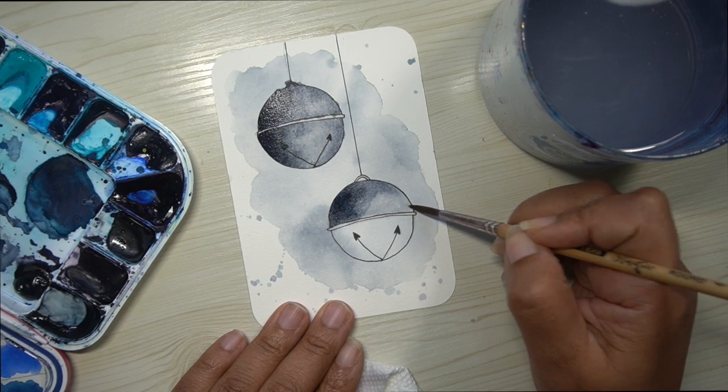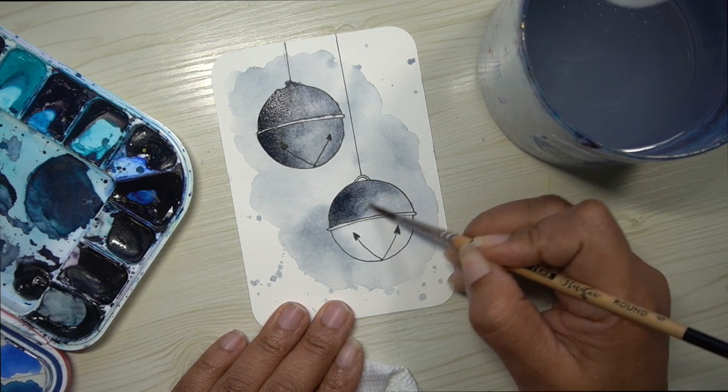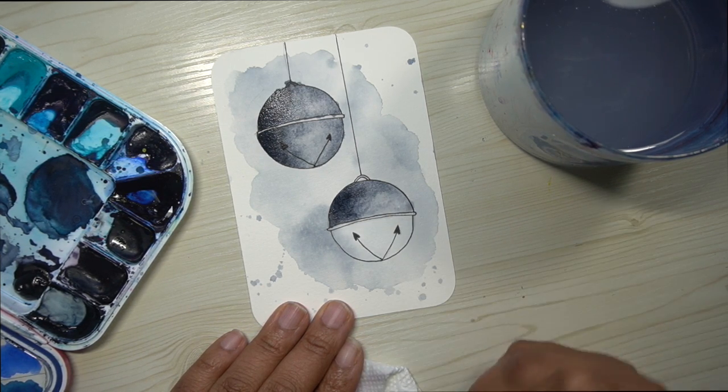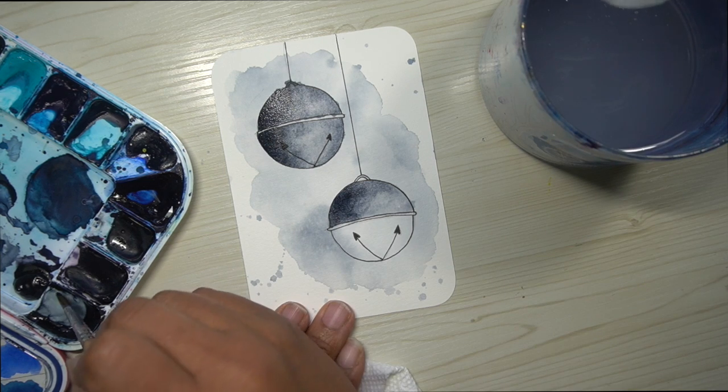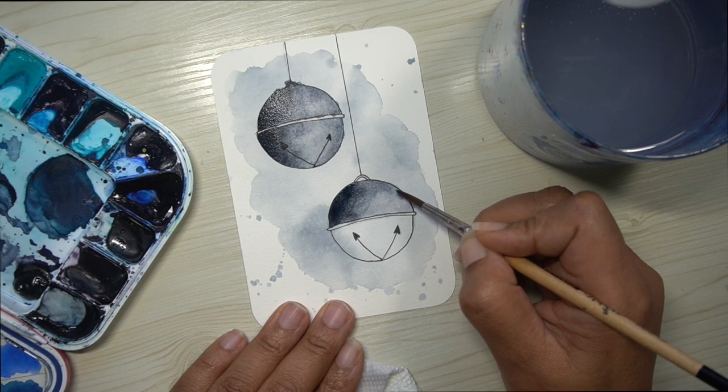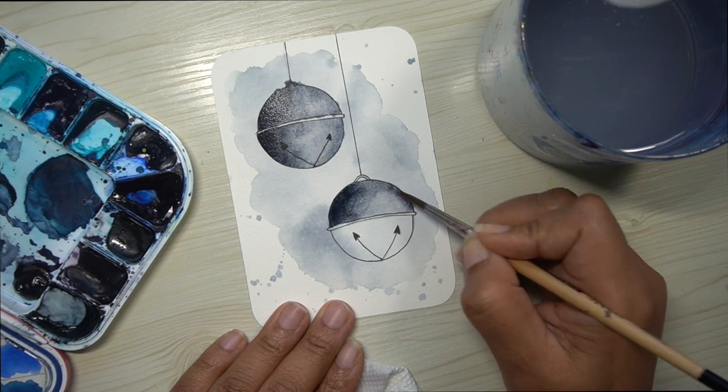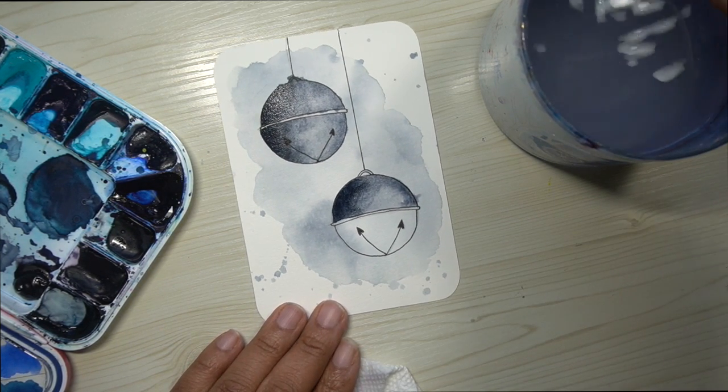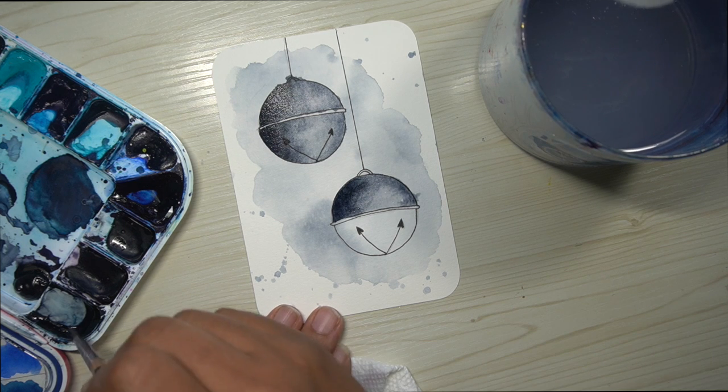Also, one thing that I noticed that I did actually forget was to paint the little hook on the top. So make sure that you don't forget that. Although mine is so small that you can hardly see it, but I will go over it later on with the black monoline pen. So make sure that you do that at the end.